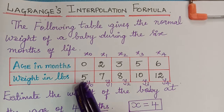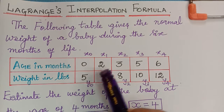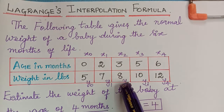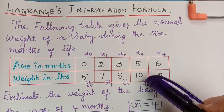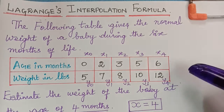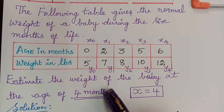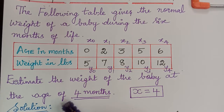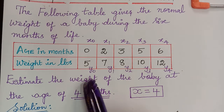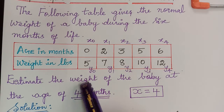When it is newly born, the baby is five pounds; in two months it is seven pounds; in three months it is eight pounds; in five months it is 10 pounds; and in six months it is 12 pounds. The question is asking us to estimate the weight of the baby at the age of four months. So when the baby is four months, we have to estimate what is the weight of the baby.